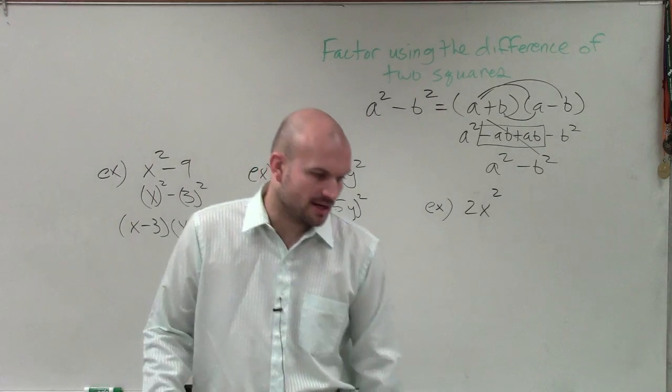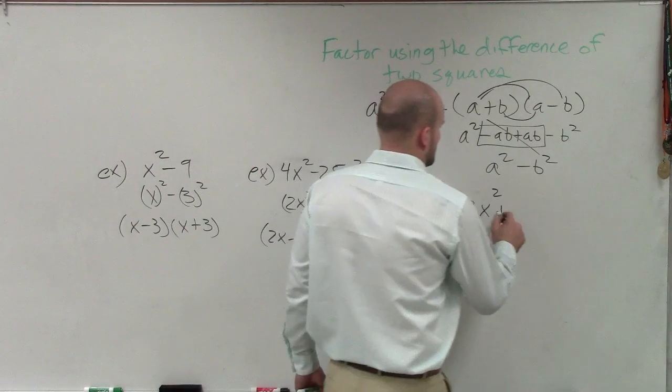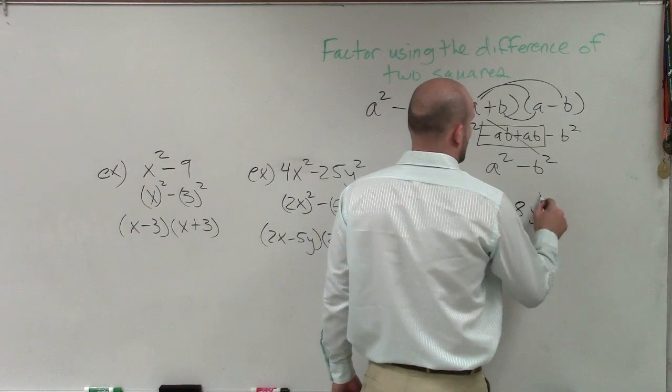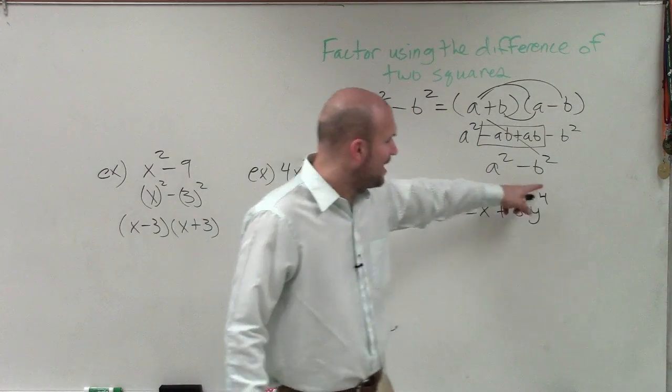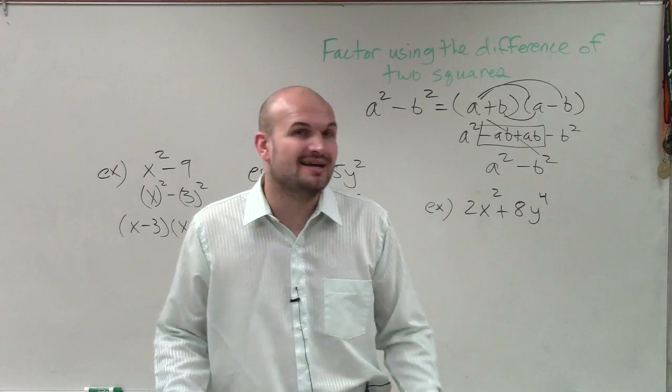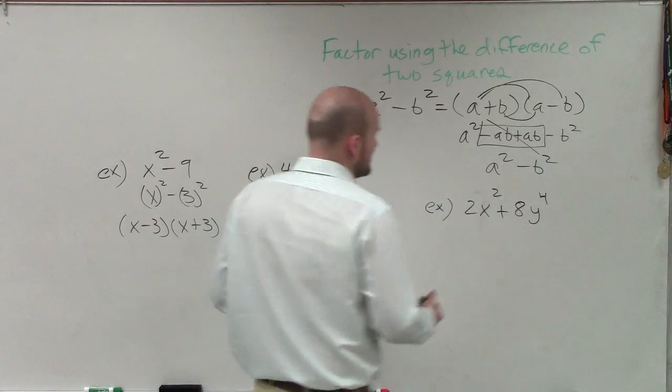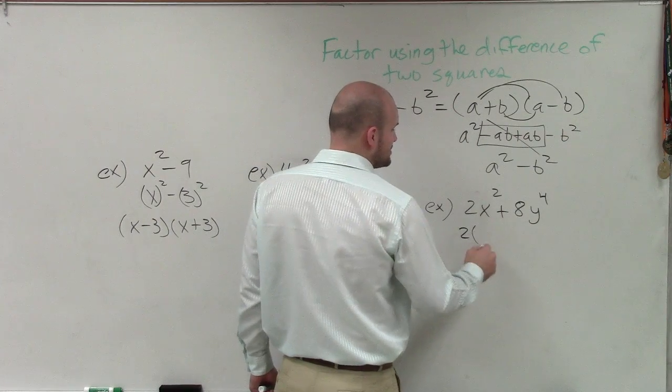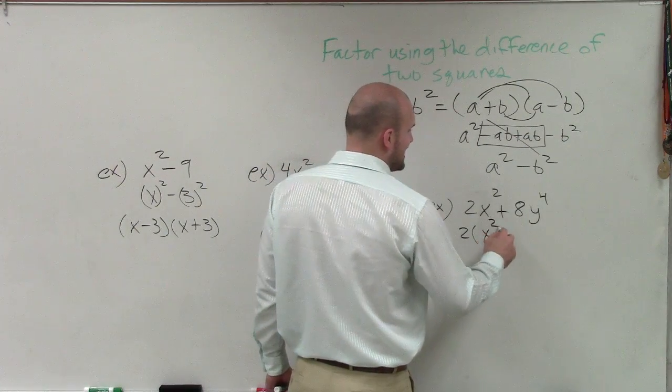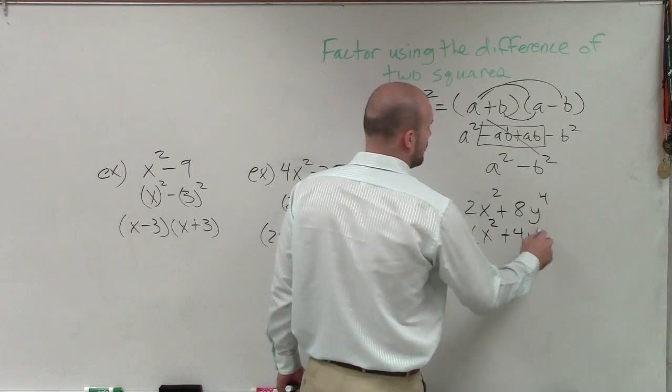Let's do 2x squared plus 8y to the 4th. Now initially you might look at this and say, well, x squared and y to the 4th, that might not look like it. But if I was going to do difference of two squares, you always want to see if you can factor out a GCF. So if I factor out a GCF, I factor out a 2, now I'm left with x squared plus 4y to the 4th.